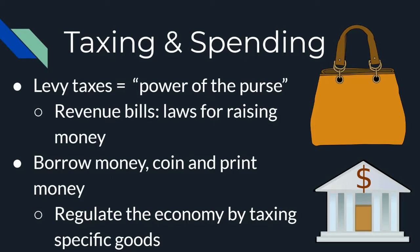Congress has the power to levy taxes, which is a very historical measure of all legislatures throughout the world. Starting with our English Bill of Rights, we really saw this consolidation of taxation power in the legislative branch. Congress has the power of the purse to generate revenue — laws that raise money for the government so it can reallocate and spend that money where necessary. This is essentially Congress's income through tax and different revenue bills.